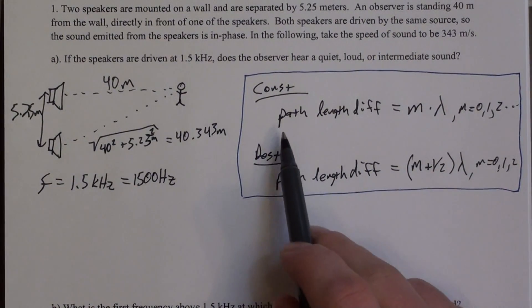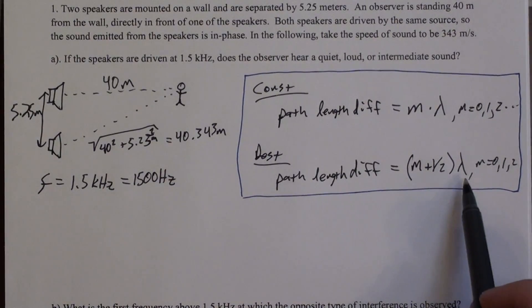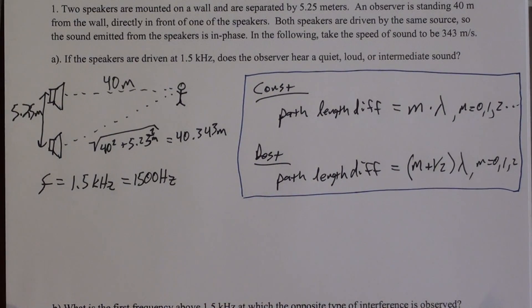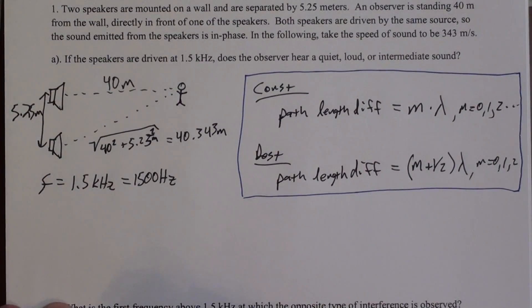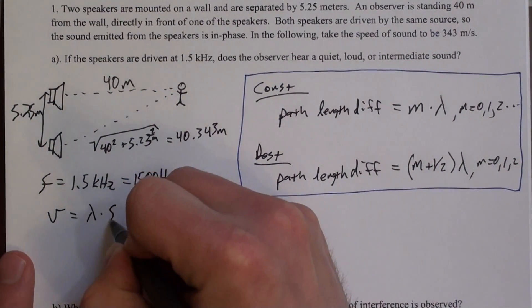So we need the path length difference, which we just calculated, is 40.343. And we also need wavelength. So we're given frequency. And remember that wavelength is related to frequency through the wave speed, which we're actually given. Take the speed of sound to be 343 meters per second.